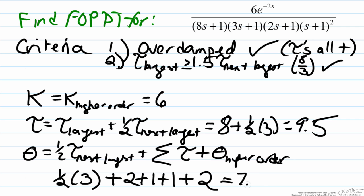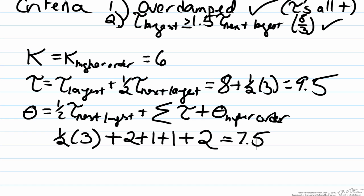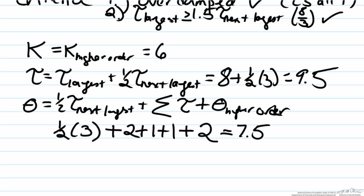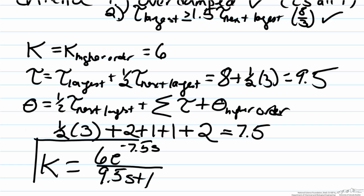So therefore what this means is, is that our transfer function, for that fifth order function, is equal to six e to the negative seven point five s, divided by nine point five s plus one. So you may be asking yourself as well, okay you made this approximation, but how good of an approximation is it? So to look at this, both transfer functions were put in to simulate how they would respond to a step function of magnitude one.